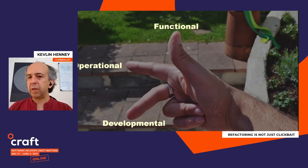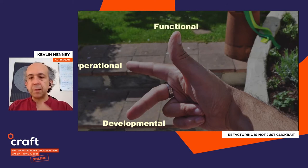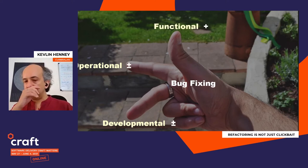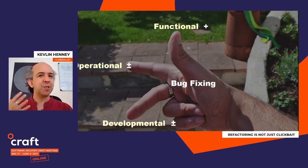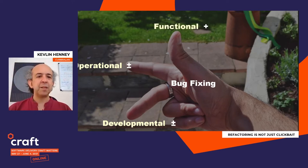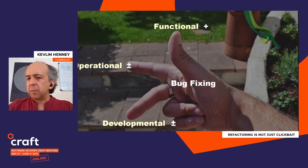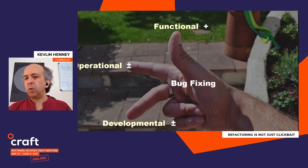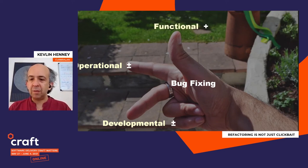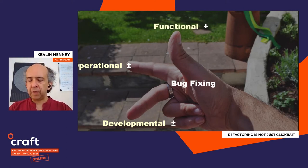Now, when we fix bugs, what we're doing is we are improving the functional aspects — we are changing the semantics. We don't have the semantics that we want, so we're going to improve them. When we fix a bug, does the performance get better or worse? Does the developmental quality of the code get better or worse? It's not necessary that the quality of the code gets better when a bug is fixed. That's a desire, but not a necessity.